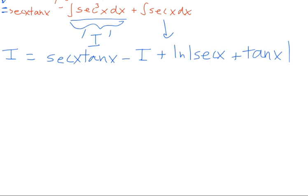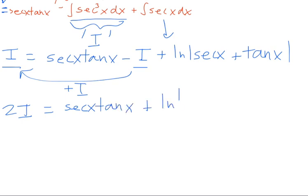But now we have two I's on both sides of this equation. We have one I here, one I there. Let's just add this negative I over to the other side. So we have two I is equal to secant x tangent x plus the natural log of secant x plus tangent x.